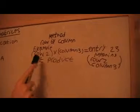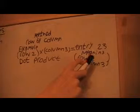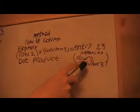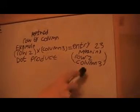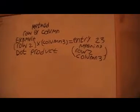For example, if you see what we did, row 2 times column 3 would get the entry (2,3), meaning the number that's in row 2, column 3. What we'll do is we'll just take the dot product of the row and the column.